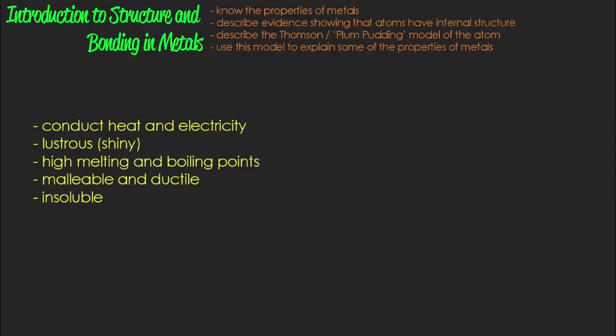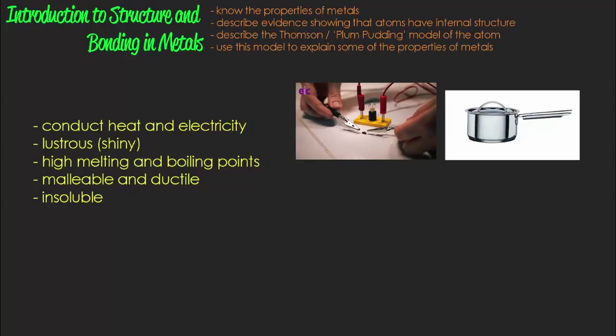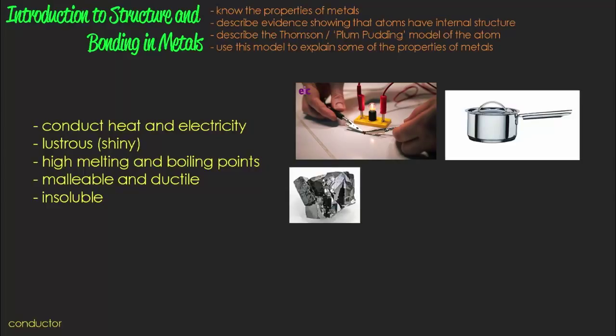So firstly they conduct heat and electricity and this makes them good for wiring to carry an electric current and for saucepans to allow energy to pass efficiently from your hob to your food through heating. In their pure form they tend to be shiny or lustrous and they tend to have high melting and boiling points. All except one, mercury, don't have enough thermal energy to exist as a liquid at room temperature.